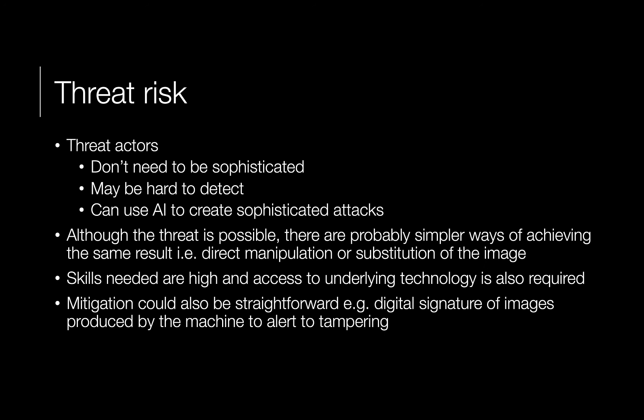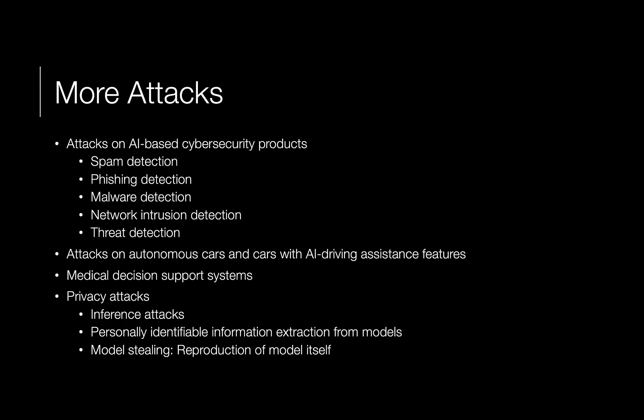That assumes you have something else controlling the hashing of the image, so it's not perfect. There are a whole range of other AI-based attacks: fooling spam detection, phishing, malware, network intrusion, attacks on autonomous cars — there are plenty of videos showing how autonomous cars can be fooled with AI driving assistance, and how Teslas have misinterpreted objects as harmless. Also relevant are medical decision support systems, privacy attacks, inference attacks, extraction of personally identifiable information from models, and model stealing.